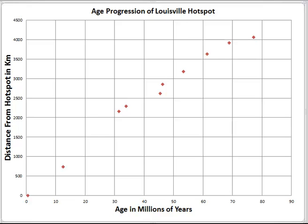A less well known hot spot is found in the South Pacific — the Louisville hot spot. It's the same geologic setting as Hawaii, only here the Pacific plate is passing over the Louisville hot spot. The Louisville volcanoes are not tall enough to rise above the surface of the sea as islands; instead they form underwater volcanoes called seamounts. But because they're formed in the same way as the Hawaiian chain, they also have an age-progressive relationship.